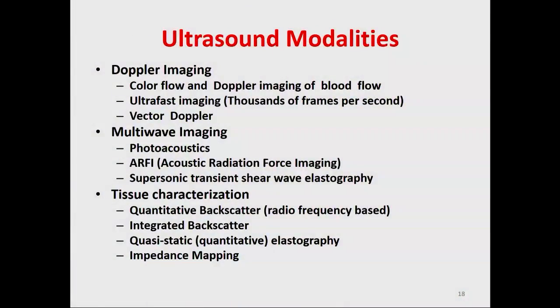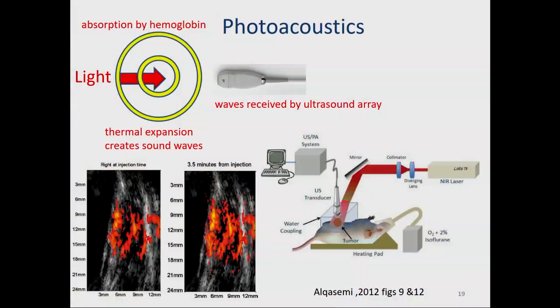Ultrasound is very good at imaging blood flow, now at thousands of frames per second. Multi-wave imaging uses one wave to create another, and tissue characterization is a way of looking at the composition of healthy and abnormal tissue. Here's an example of multi-wave imaging called photoacoustics: light impinges on an artery carrying blood, the hemoglobin absorbs the light and causes a small thermal expansion, which in turn causes acoustic waves to radiate out and be picked up by an ultrasound array. You can also see how an injection starts to diffuse out into the body.